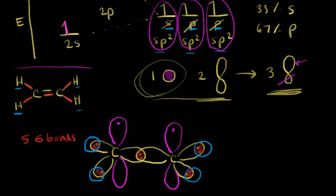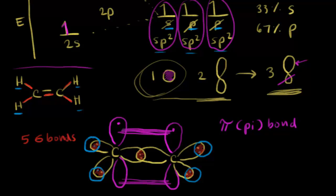Then we have a new type of bonding. These unhybridized p orbitals can overlap side-by-side — above and below we get side-by-side overlap of our p orbitals — and this creates a pi bond. A pi bond is side-by-side overlap. There is overlap above and below the sigma bond, and that's going to prevent free rotation. When we looked at ethane, we had free rotation about the sigma bond connecting the two carbons, but because of this pi bond, rotation is prevented — so no free rotation due to the pi bond. In a double bond, one bond is a sigma bond and one is a pi bond.